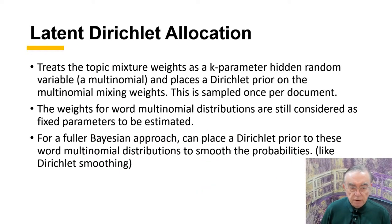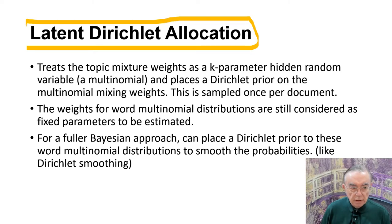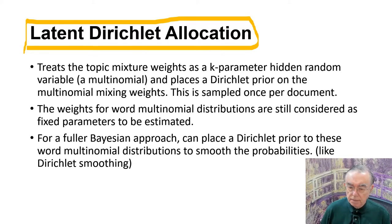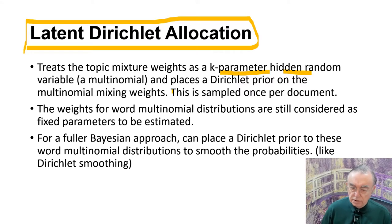There is a famous approach invented by the brilliant Blei, called latent Dirichlet allocation, which is possibly the most powerful way of doing topic analysis. It has a hidden K parameter — a hidden random variable — where the variables have multinomial distributions and a Dirichlet prior distribution, which is why it's called latent Dirichlet allocation. This is an example of clustering where you have hidden clusters which you don't see directly.